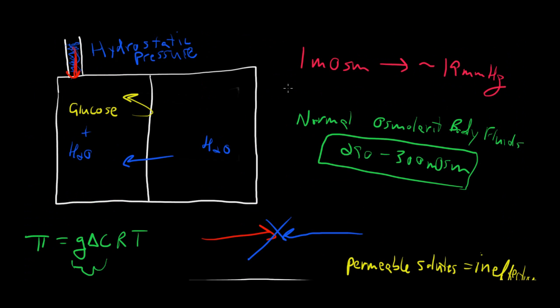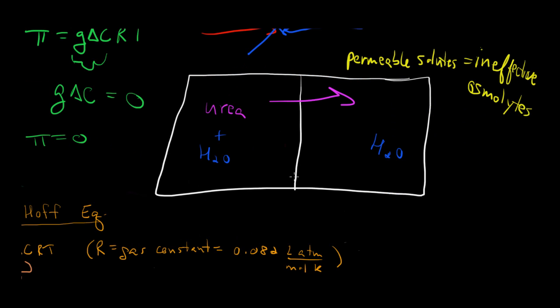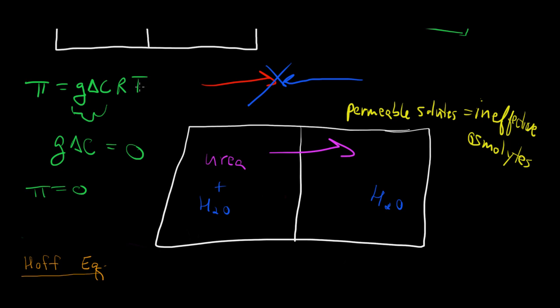Glucose is an impermeable solute. 100% is reflected. So impermeable solutes are effective osmolites. Intuition tells us that there might be something in between, not quite 100% permeable and not quite 100% impermeable. How do we account for that in this equation?